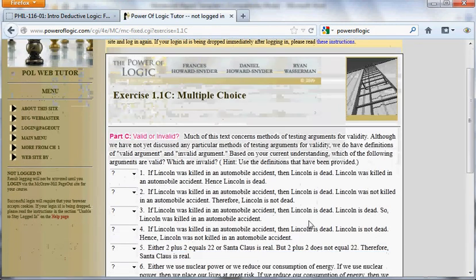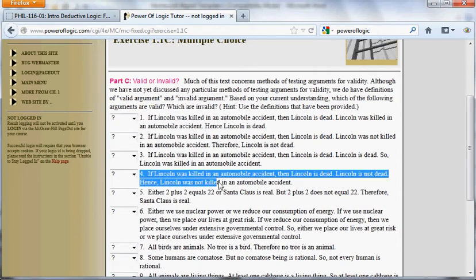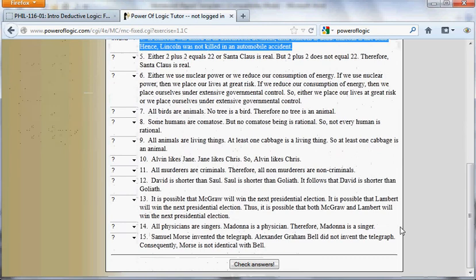So it might be better to do them all. And by the way, you don't have to do them all. You could just do a selected one. So for example, suppose I do number four here. I have an argument here. If Lincoln was killed in an automobile accident, then Lincoln is dead. That's the first premise. Here's premise two. Lincoln's not dead. So hence, Lincoln was not killed in an automobile accident. And I see I have two choices. It's either valid or invalid. This exercise has to do with determining the validity or invalidity of the argument. Let me pick invalid just for fun. And I'll scroll down here and check my answers.